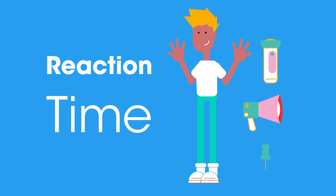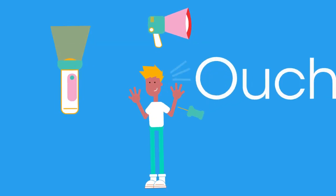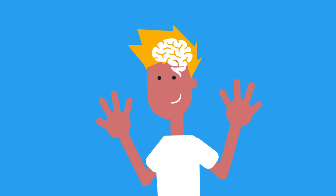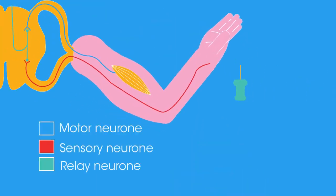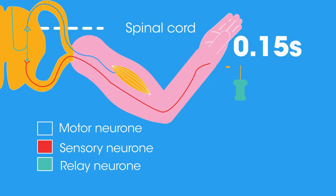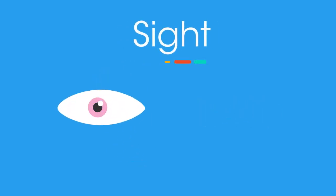Our reaction time does to some extent depend on what the stimulus is. The response time for sight and hearing are both slightly longer than for touch, as the brain is involved in processing the incoming data before an instruction can be transmitted for a suitable response. We respond to touch quite differently through the reflex arc, where the response is a reflex action mediated by the spinal cord and not the brain.